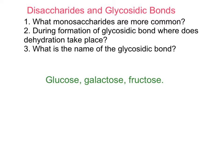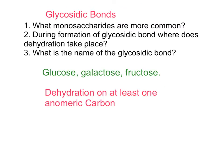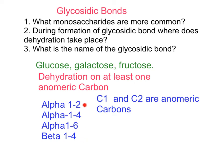Glucose is found in maltose, in many polysaccharides, and also in lactose and sucrose. The formation of a glycosidic bond is a dehydration reaction that takes place at least at one anomeric carbon. Here is a list of the different glycosidic bonds we are going to discuss with the structures of disaccharides.